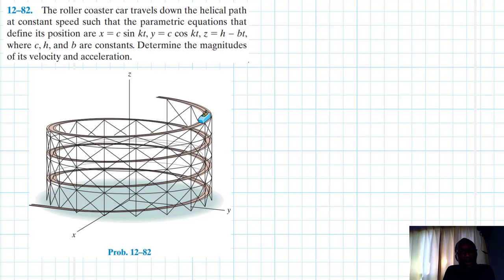and z = h - bt, where c, h, and b are constants. Determine the magnitudes of its velocity and acceleration. This problem is coming from Engineering Mechanics and Dynamics, Fourteenth Edition by R.C. Hibbeler.